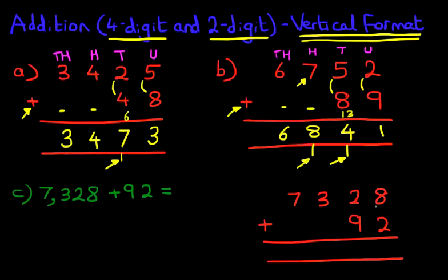So we're going to start with the units on the right-hand side. We've got 8 plus 2. So what is 8 plus 2? The answer is 10. 1 here and 0 here. That's 10.